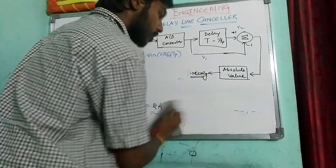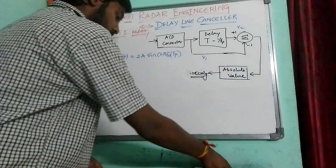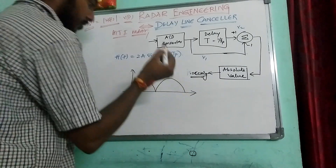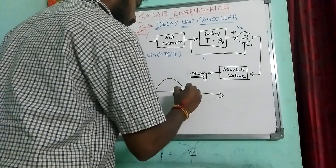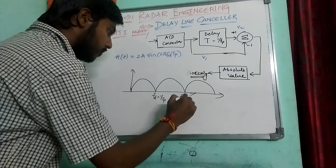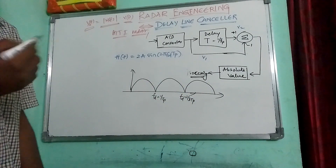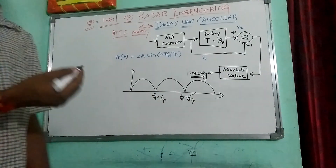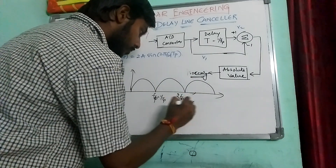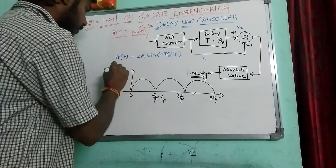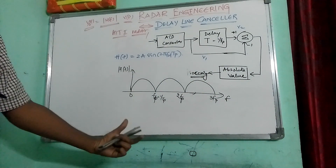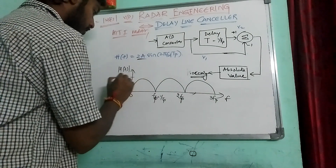Let's take the graph of this transfer function and see how it looks. At frequency f_d equal to 1 by 2T_p, this is the first pulse repetition frequency. At 2F_p, and at 3F_p, the response repeats. The plot of mod H(f) versus frequency looks like this — with amplitude 2A — showing nulls at zero and at integer multiples of the pulse repetition frequency.